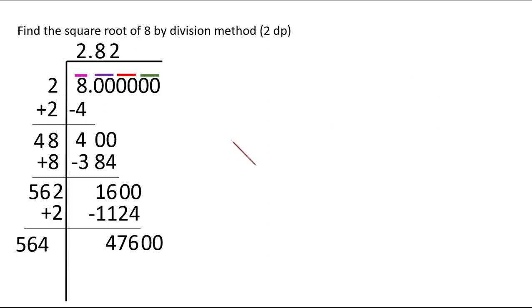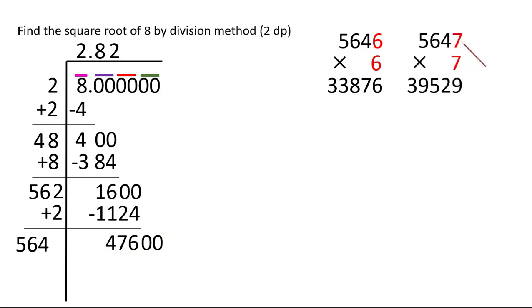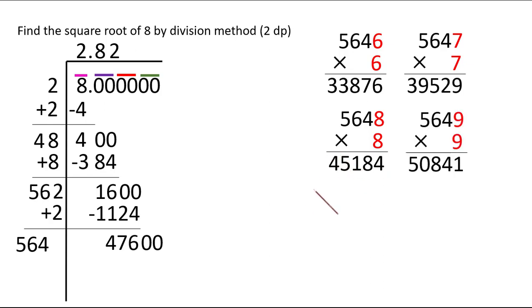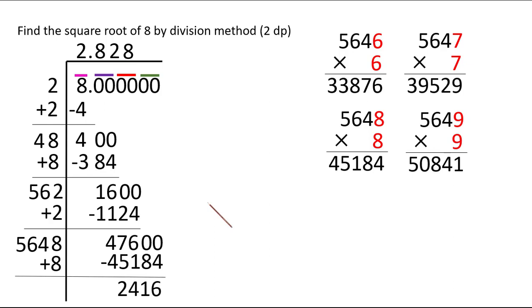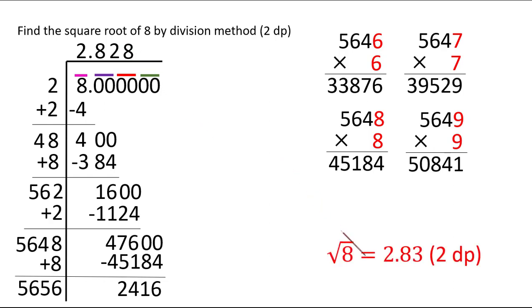Bring the last two zeros down. We need a digit after 564: trying 8 gives about 45000 and 9 gives about 50000 which is bigger, so we settle with 8. 5648×8=45184. On subtraction we get a remainder. Since we want only 2 decimal places and we have the third decimal digit, we round: the third decimal is 8, which is ≥5, so we round up. The square root of 8 is 2.83.